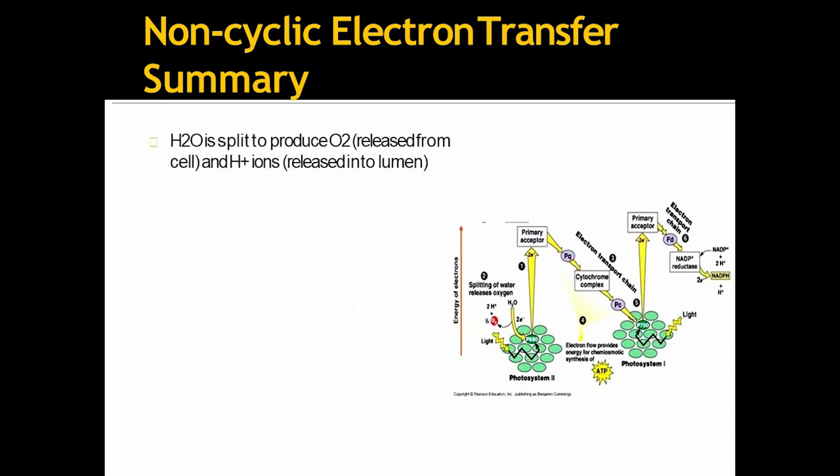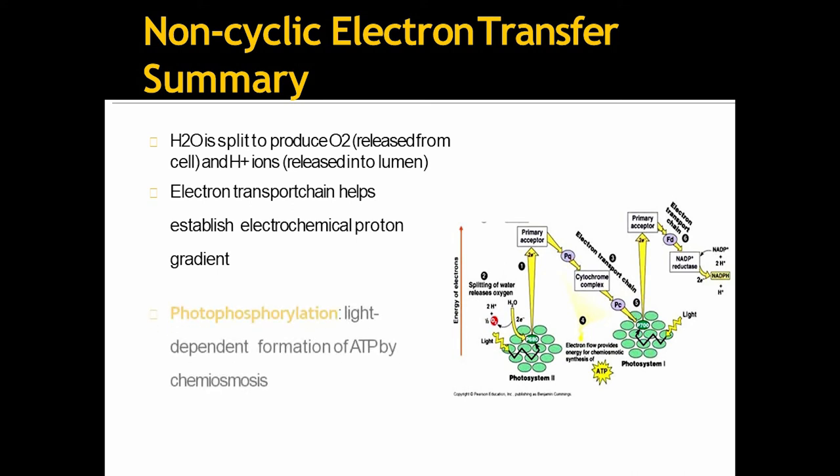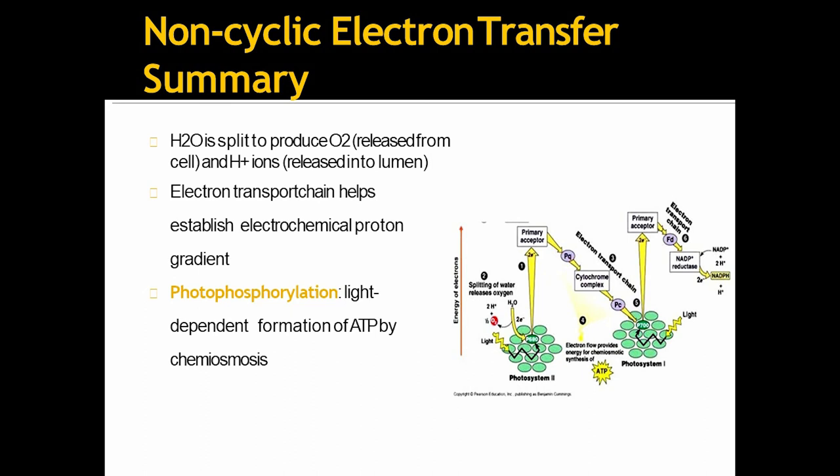So, H2O is split to produce oxygen released from cell and H plus ion released into lumen. So, this is called hydrolysis occurs in photosystem II. Electron transport chain helps establish electrochemical proton gradient. Now, light dependent formation of ATP by chemiosmosis is known as photophosphorylation. NADP plus is the final electron acceptor that produces NADPH. It looks like Z because it is a graphical representation of energy flow of electrons.